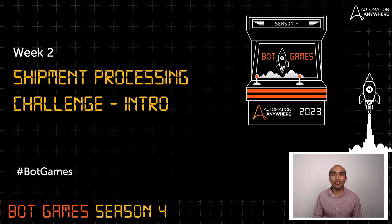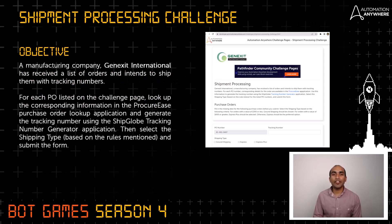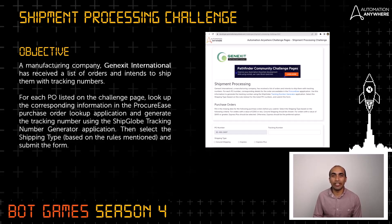Let's look at the objective of the challenge. A manufacturing company, Genexit International, has received a list of orders and wants to ship them with a tracking number. For each PO number listed on the challenge page, look up the corresponding order information in the ProcureEase application and generate the tracking number from the ShipGlobe application. Select the shipping type based on the rules mentioned on the challenge page, and also get the full state name for the state code mentioned in the ProcureEase application.